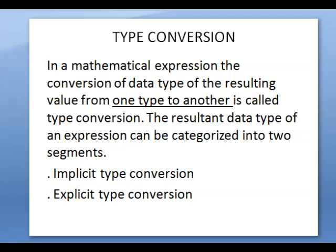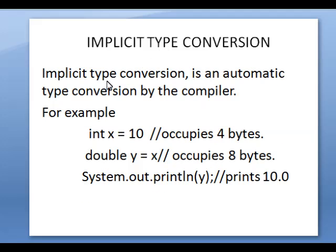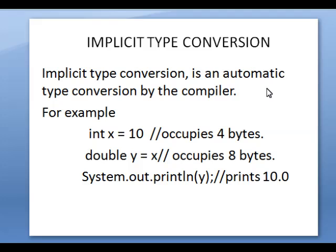First one is implicit type conversion. Implicit type conversion is an automatic type conversion done by the compiler. If two different data types are present — for example, integer and double — the compiler will check the size. Integer is 4 bytes and double is 8 bytes. The value of Y will be in double because double has the higher size. So implicit type conversion means the conversion type is handled by the compiler automatically.